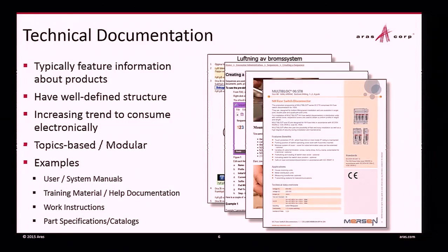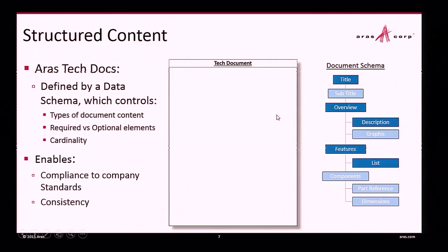For any of these documents, I can go down the list and ask: does it have a well-defined structure? Is it about products, parts, or similar items? Is it topic-based? Is it based on modular information? So what is structured content? I have an example here that illustrates what that is.